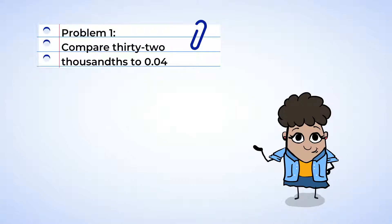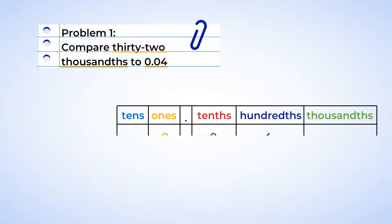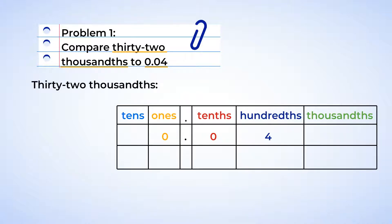Problem one. Compare thirty-two thousandths to zero point zero four. We can start by translating thirty-two thousandths into decimal form. Since we're using the place value of thousandths in the name, the last digit, the two, needs to be in the thousandths place. There we go. Zero point zero three two.